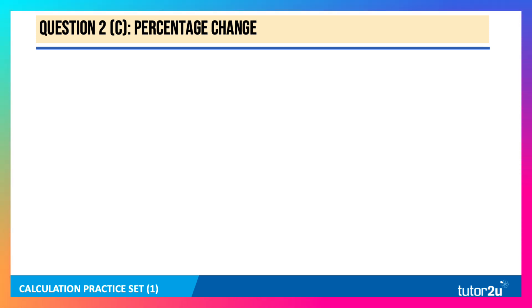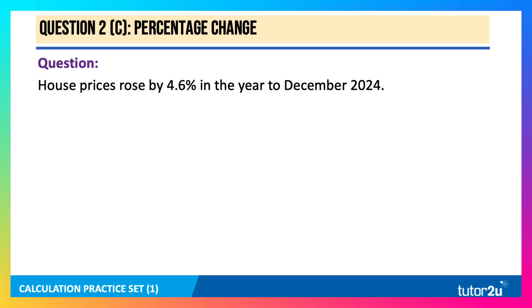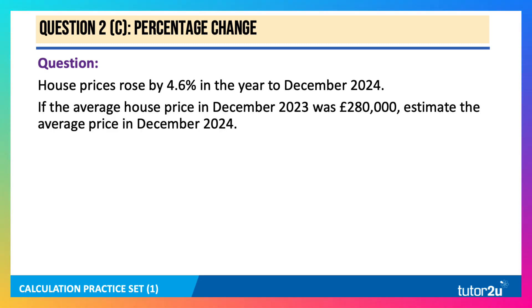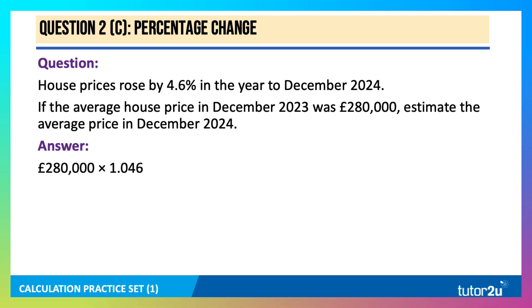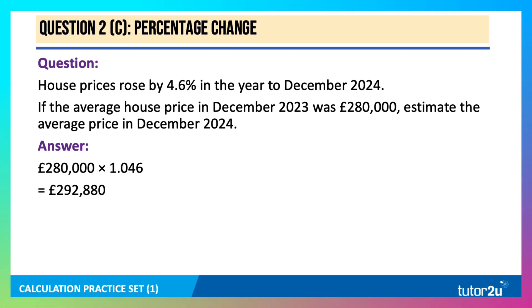Here's a third percentage change question. House prices rose by 4.6% in the year to December 2024. If the average house price in December 2023 was £280,000, estimate the average price in December 2024. We multiply £280,000 by 1.046 — since inflation was 4.6%, we add 1 to get the multiplier. That gives an estimated average price of £292,880.